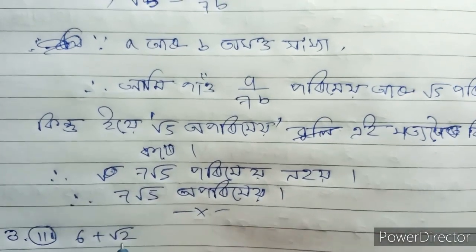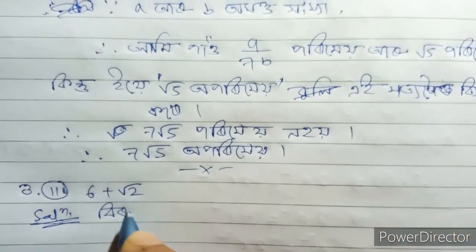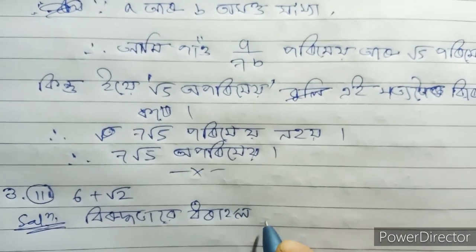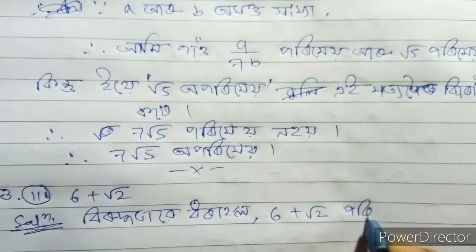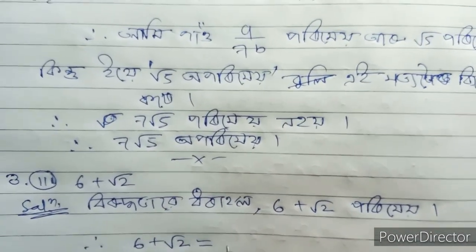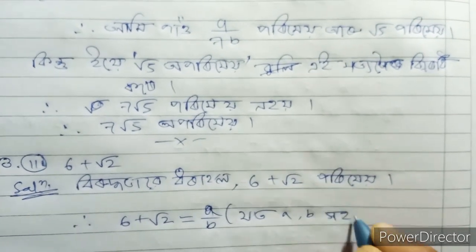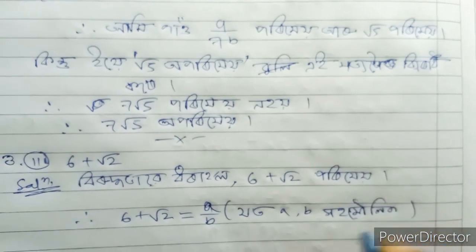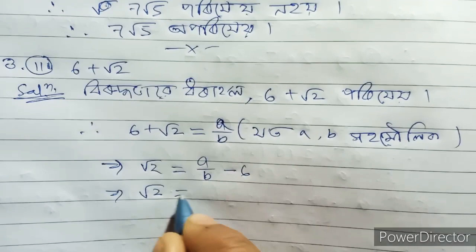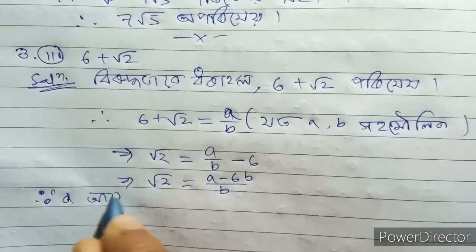6 plus root 2 solution. We have 6 plus 2 root 2, then 6 plus root 2. We say root 2 equals a by b, where a and b are co-prime. Then 6 plus root 2 equals a by b, so root 2 equals a by b minus 6, which gives root 2 equals b times a minus 6b, that is a minus 6b by b.